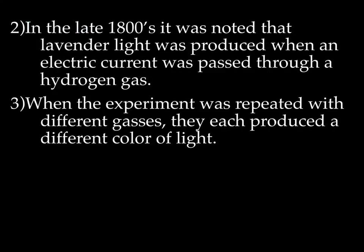Okay, so in the late 1800s, it was noted that lavender light was produced when an electric current was passed through hydrogen gas. So if you go back and think about Thompson's experiment, where he had that gas tube, he got everything out of it, and then he put electricity through it and he got that ray of what he thought was light, turned out to be particles. Same experiment, except for this time, they took the glass tube, took everything out of it, and then filled it with hydrogen gas. Connected it to a battery, and it glowed lavender. And they repeated this experiment with different gases, so maybe neon gas or helium gas, all different kinds of gases, and each one produced a different color of light.